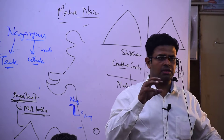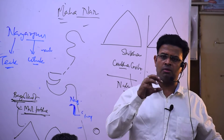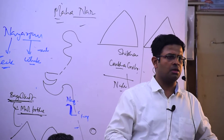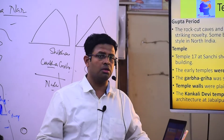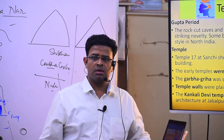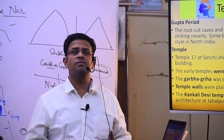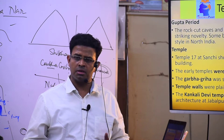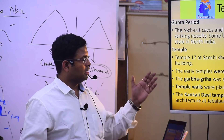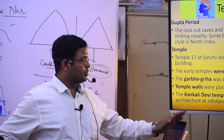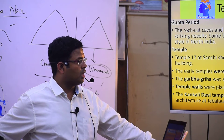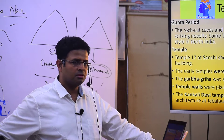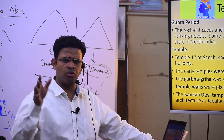The sanctum sanctorum, where the major deity or main deity lives, is known as Garbhagriha. Generally, the Vimana or Bimana is located above the Garbhagriha. Early temples were small — the Garbhagriha was square, the roof was generally flat, and the temple walls were plain.